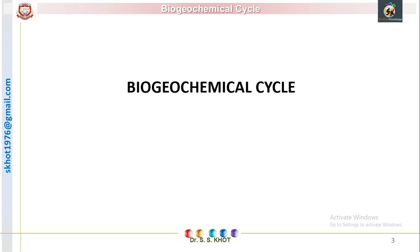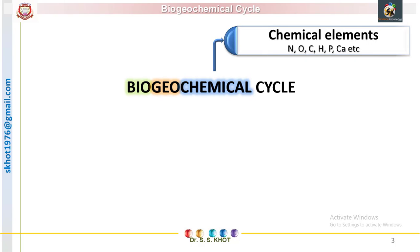The term is derived from three different words. It refers to the cyclic movement of chemical elements between the geosphere and biosphere. The chemicals include various elements such as nitrogen, oxygen, carbon, and so on.